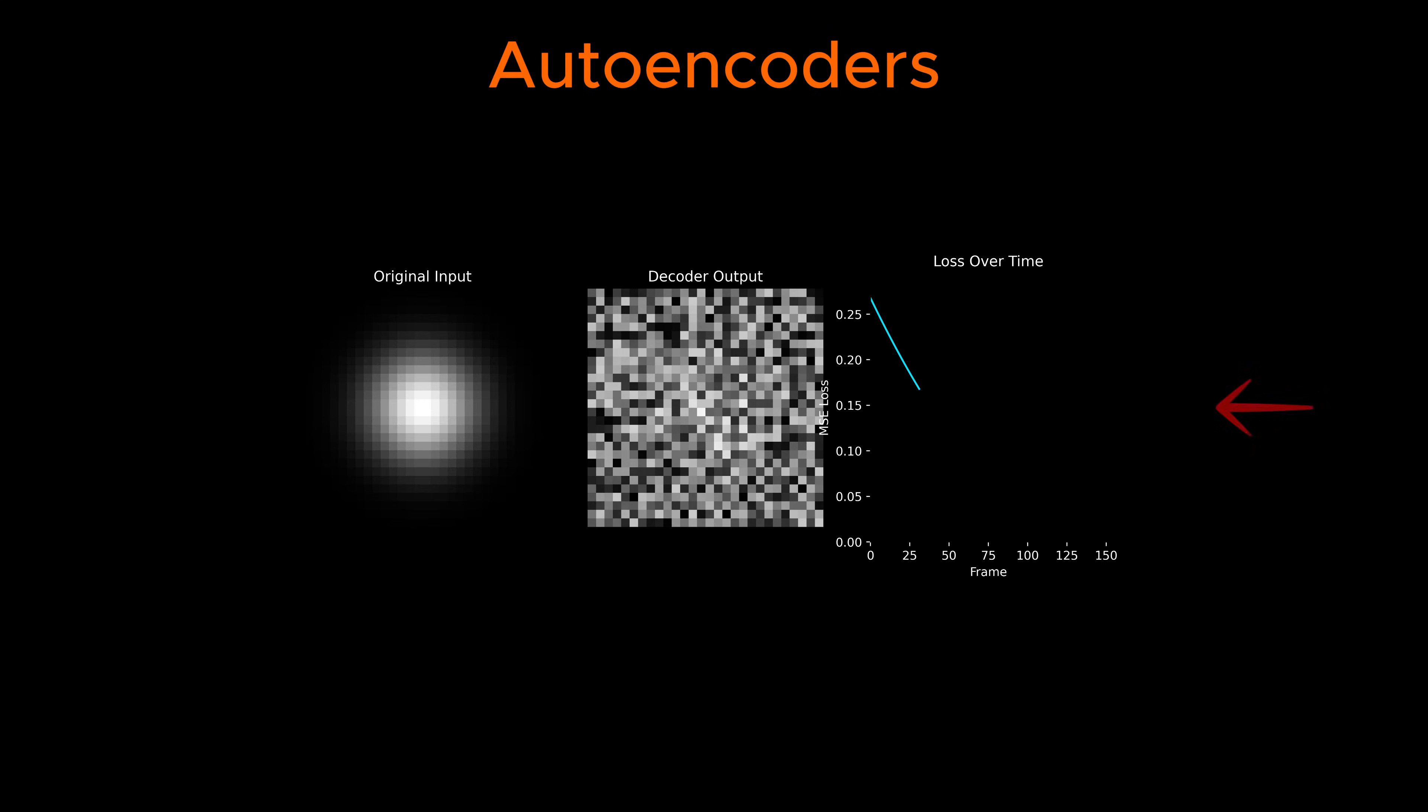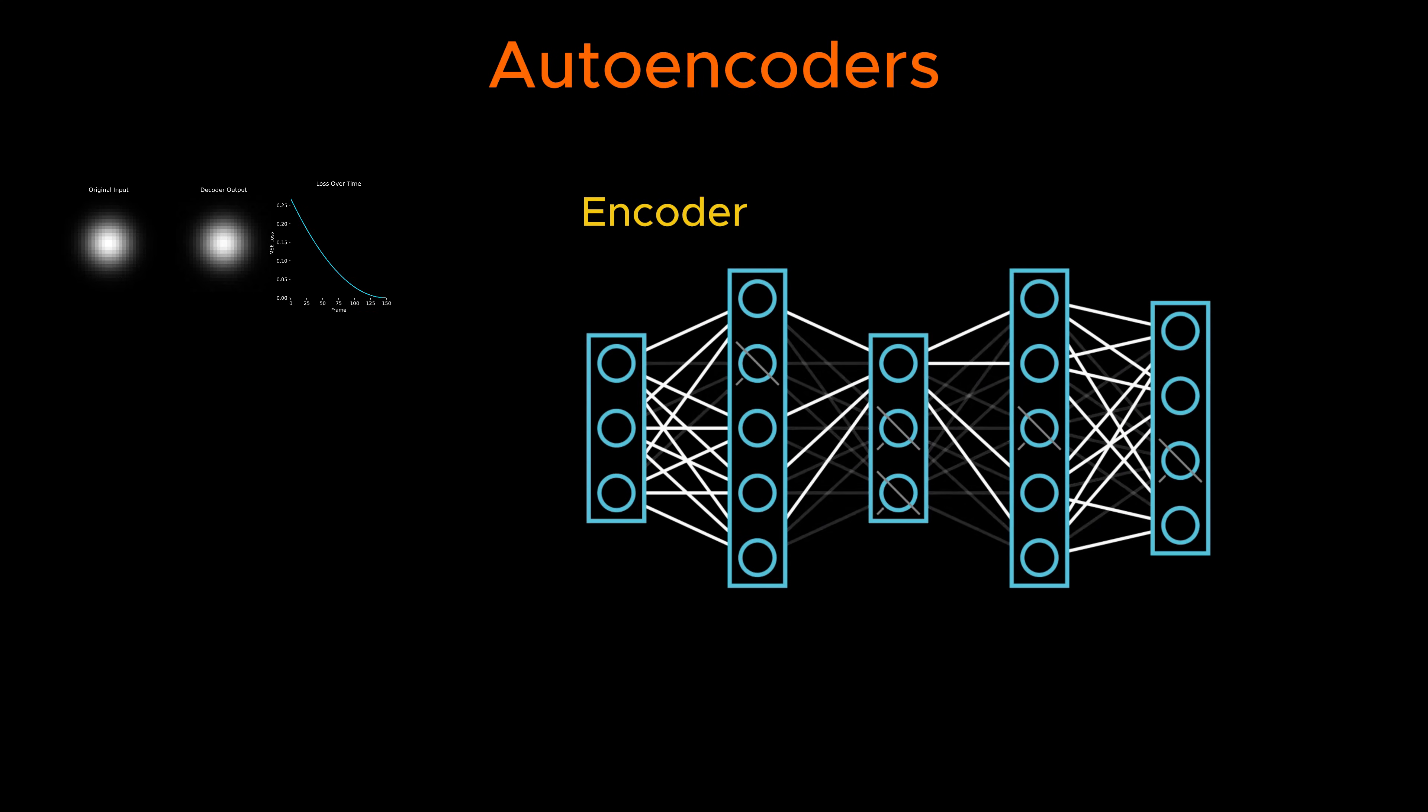Autoencoders are trained to minimize the difference between the decoder's output and the original input. Since the encoder can transmit only a limited amount of information to the decoder, it is compelled to capture the most essential features of the data. As a result, the autoencoder naturally learns an efficient representation of the input data within the latent space.